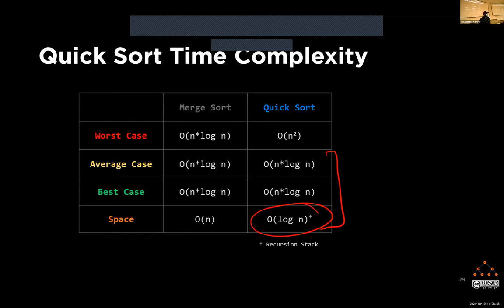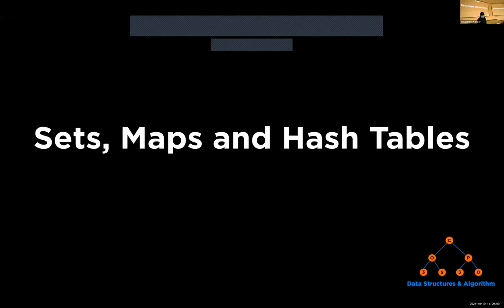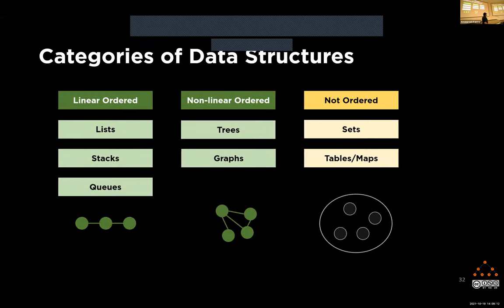Somebody mentioned the set data structure. We are already done with all the linear and nonlinear ordered data structures, and now we are going to learn about unordered ones — data structures that do not have an inherent order underlying them.